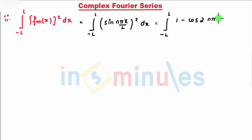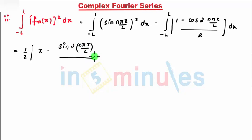So that is minus L to L, this becomes (1 - cos 2nπx/L), and this whole gets divided by 2. Let's integrate this. So I get 1/2 constant outside, integration of 1 is nothing but x minus integration of cos is nothing but sin 2nπx/L, the whole gets divided by 2nπ/L, where my lower limit is minus L.